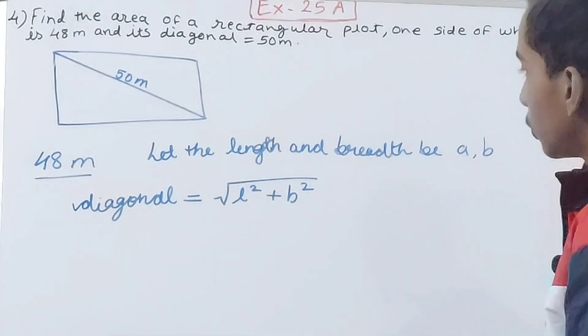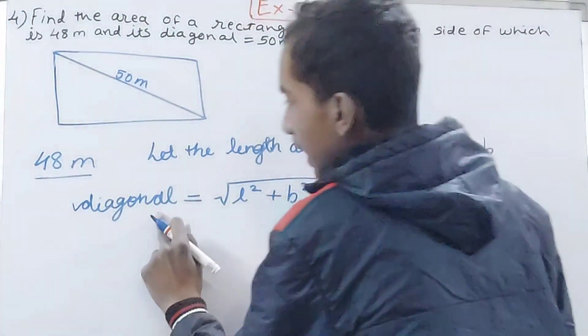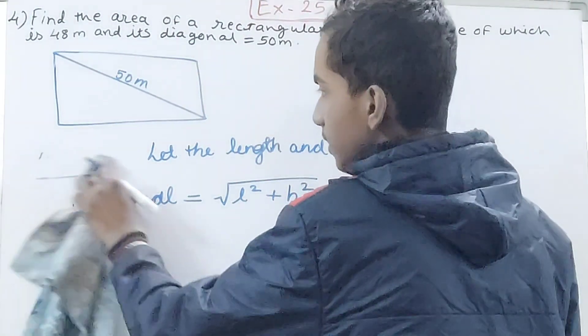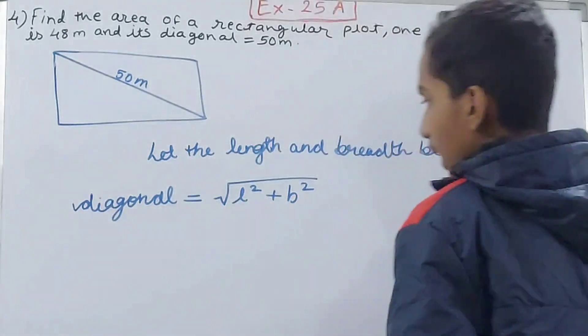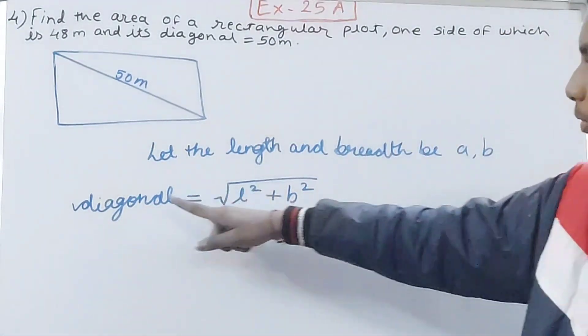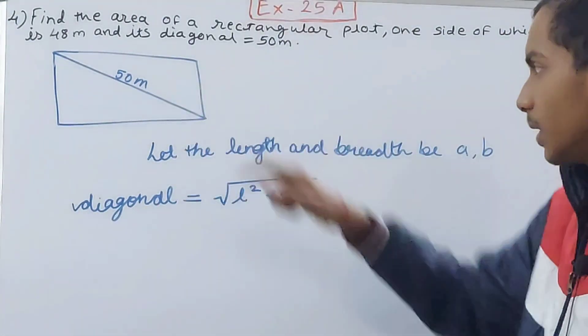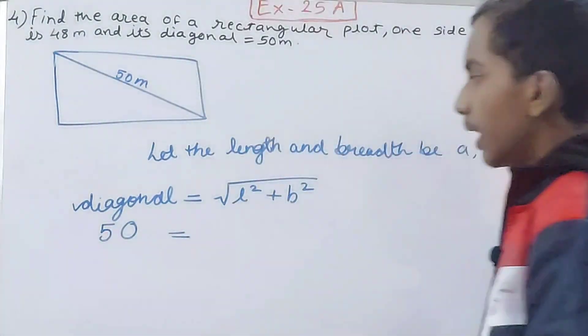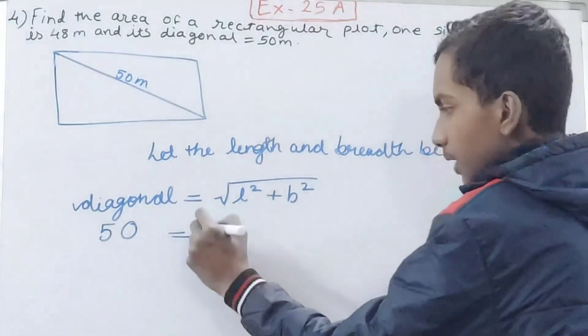So diagonal is equal to the root of l² plus b². So what I can put values here, diagonal I know is 50 meters, so in place of diagonal can I write 50? Yes I can. And then under root again I can put this under root here.